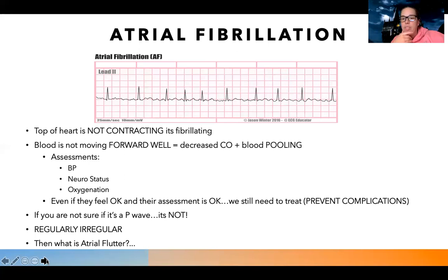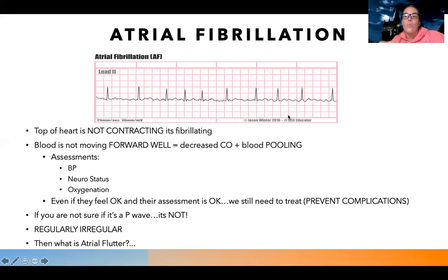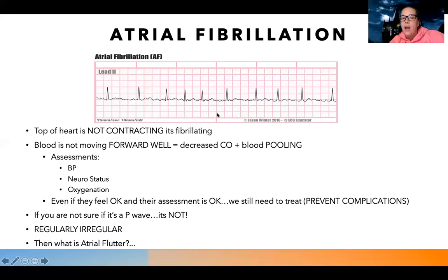Something that helps students: when looking at this rhythm, a lot of times students say they see P waves. But can you look at something and say that is one hundred percent a P wave? There's nothing you can firmly say looks like what it's supposed to. Go back and look at what normal sinus rhythm looks like and see how different this is. If you can't succinctly say there's the P wave right before the QRS the way it's supposed to be, it is not a P wave.